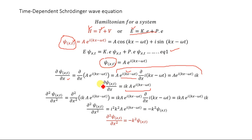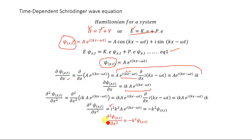Taking the second partial derivative with respect to x, we get ∂²ψ(x,t)/∂x² = i²k² · Ae^(i(kx − ωt)). Since i² = −1, this simplifies to ∂²ψ(x,t)/∂x² = −k²ψ(x,t).